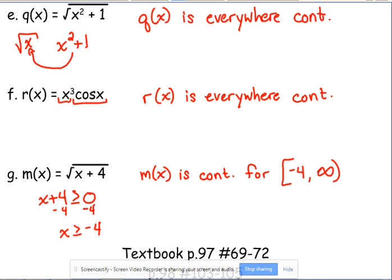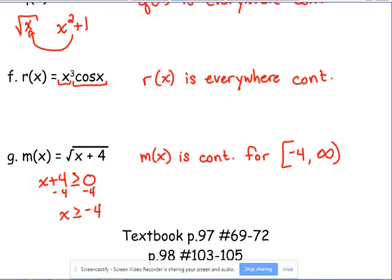So it can only be continuous where it's defined. So it's defined from negative 4 to infinity, so it's continuous for those values. You'll see here some practice problems on textbook page 97 and 98. Give those a shot and then come back for the next video.